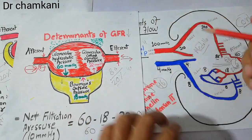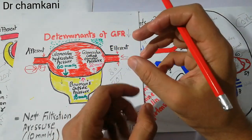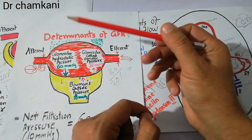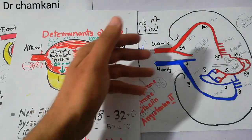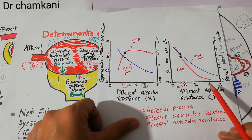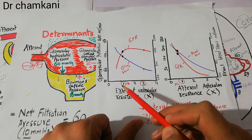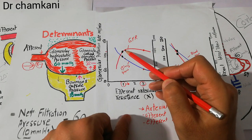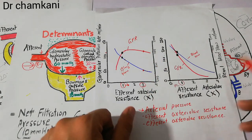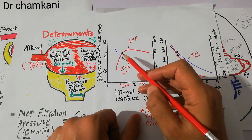However, if the constriction of the efferent arteriole caused by angiotensin 2 increases too much, then ultimately the GFR and glomerular hydrostatic pressure may fall. With slight constriction of the efferent arteriole, blood flow decreases but GFR increases. In contrast, even slight constriction of the afferent arteriole causes the GFR to suddenly drop, whereas with the efferent arteriole, GFR initially increases before falling with excessive resistance.